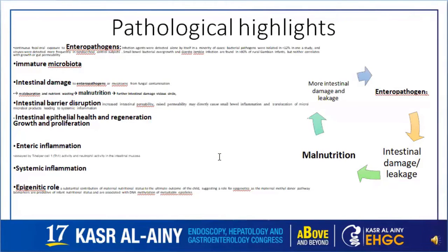Although the specific mechanics of this disease are poorly understood and largely theoretical, there are some consistent findings backed by evidence. At the heart of this disease is an overload of enteropathogens coupled with an imbalance with deficient or immature microbiota. This culminates in intestinal damage with barrier failure, with ongoing attempts at healing and repair and simultaneous enteric as well as systemic inflammation, with epigenetics playing an important role in modifying the final outcome.